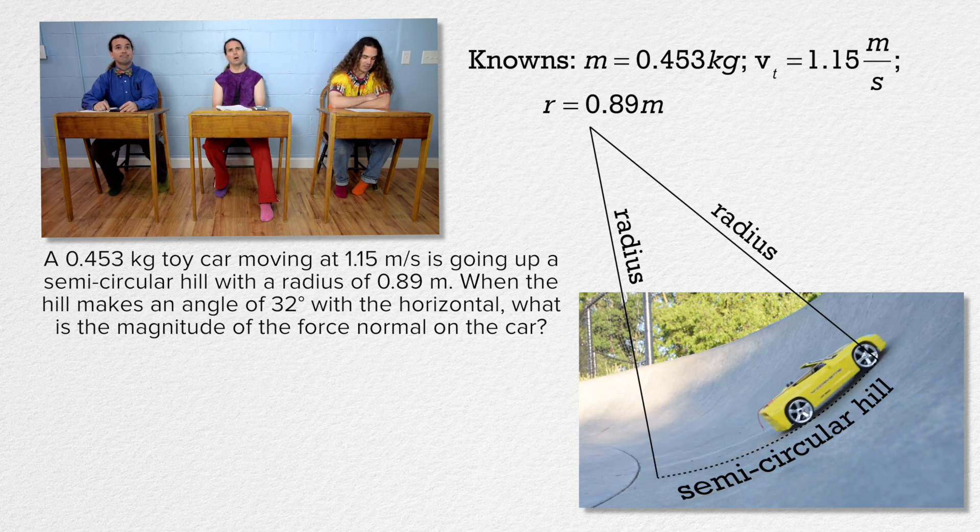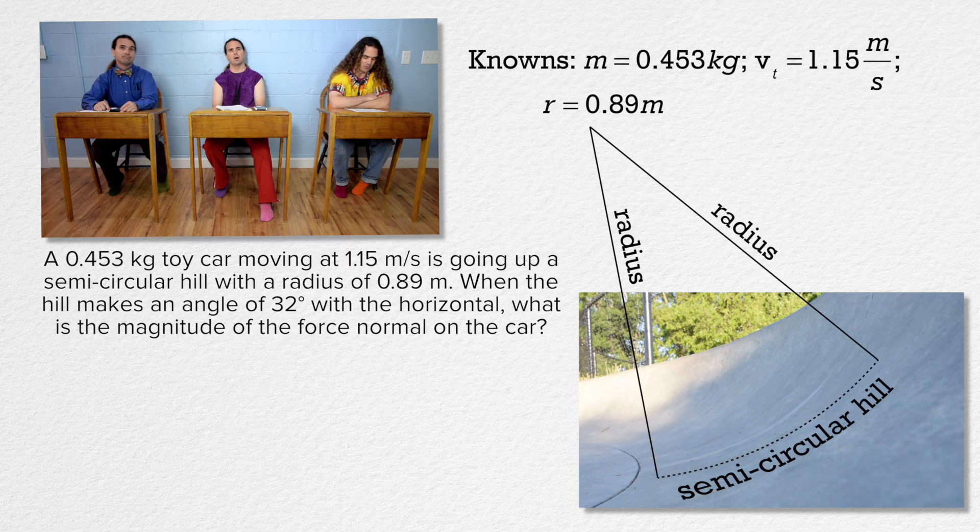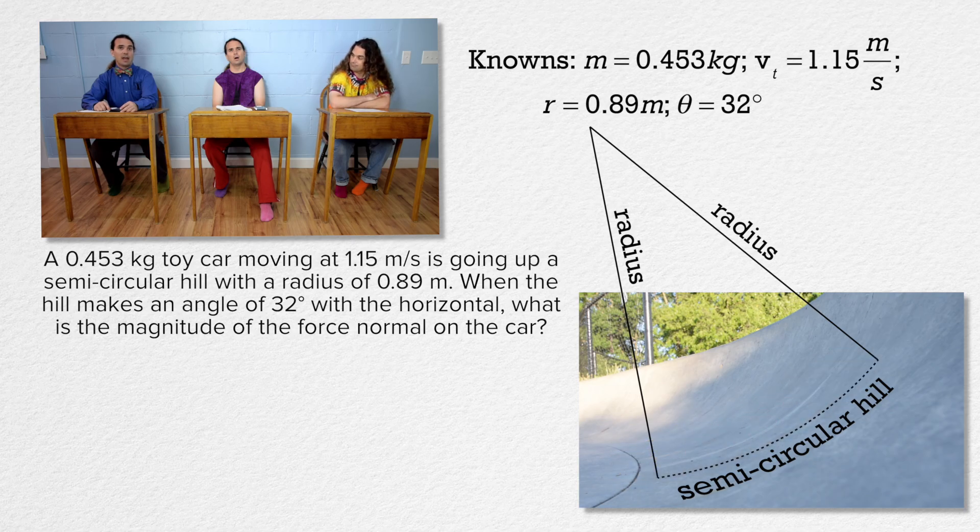When the hill makes an angle of 32 degrees with the horizontal, what is the magnitude of the force normal on the car? Theta equals 32 degrees and force normal equals question mark.